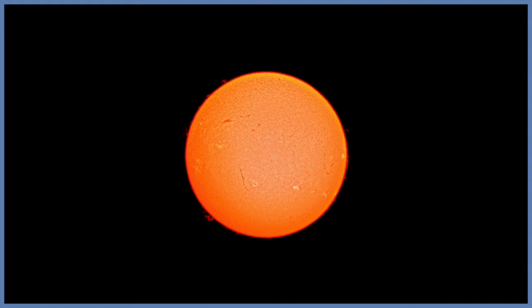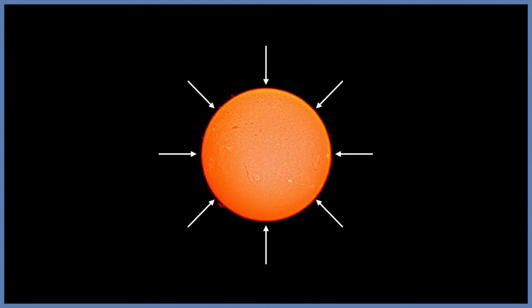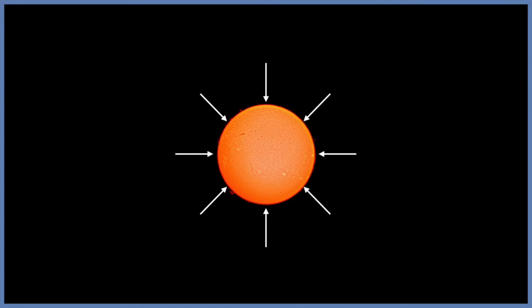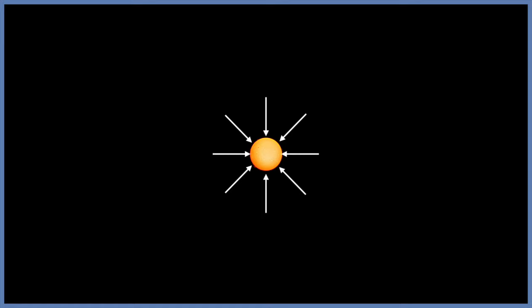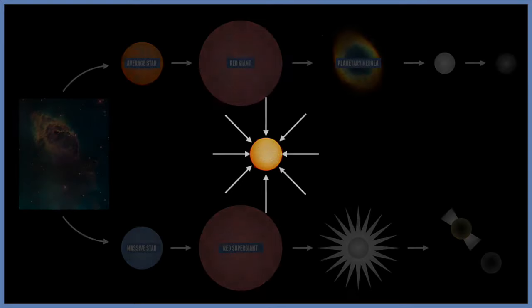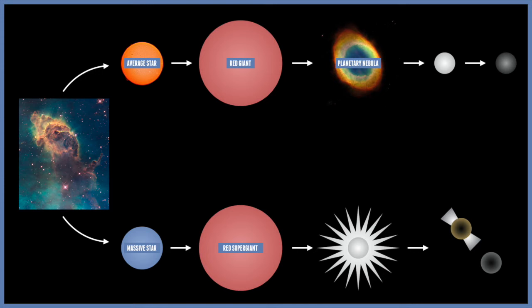When low mass stars die, they collapse under their own weight until their centers act in the same ways like a solid. A star like our Sun will collapse at the end to about twice the size of Earth. These white hot dying stars are called white dwarfs by astronomers. Perhaps the best known white dwarf orbits the brightest star in the sky, Sirius, but it requires quite a large telescope to see it.